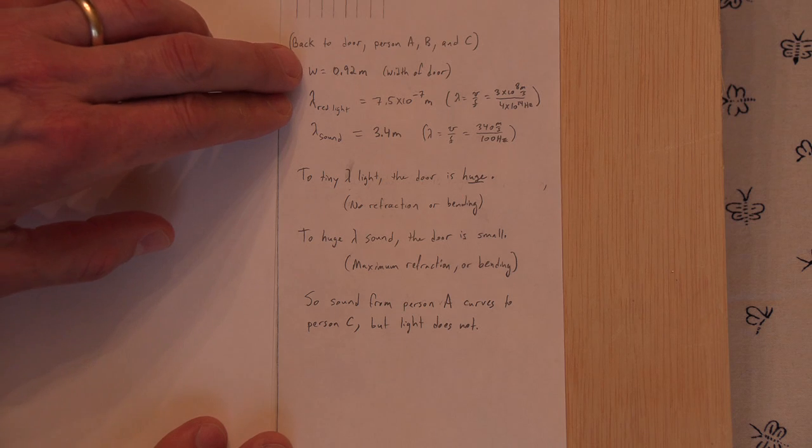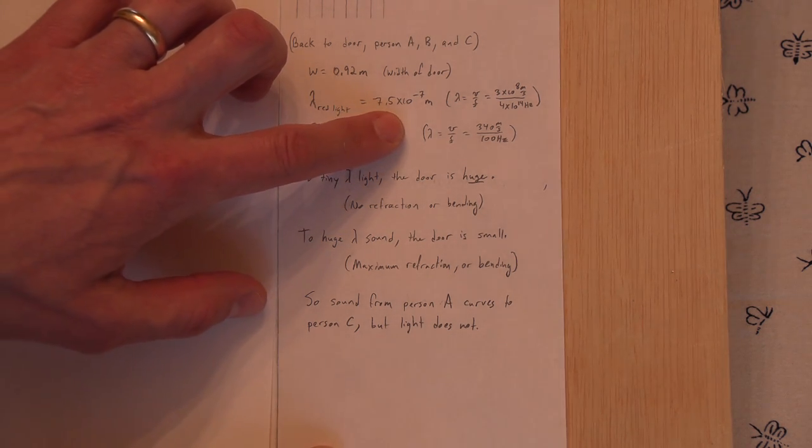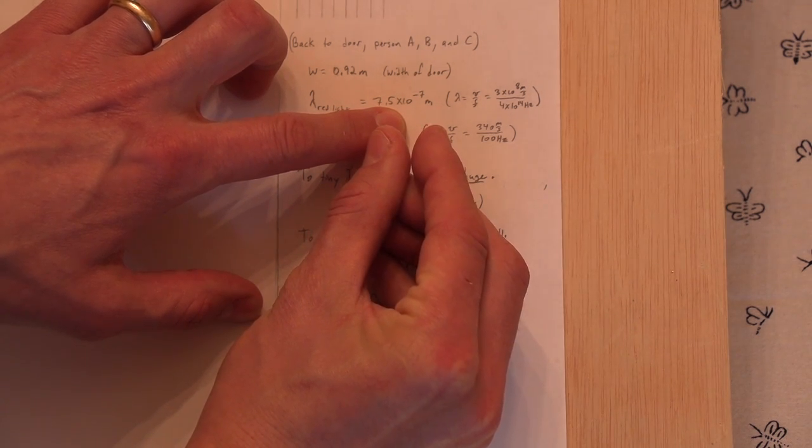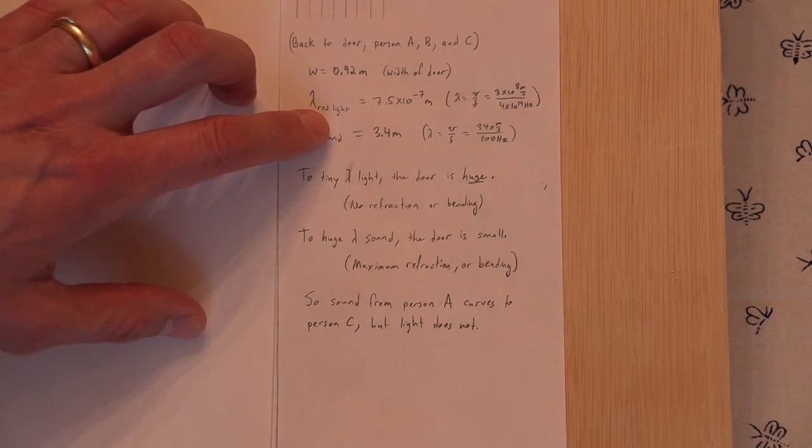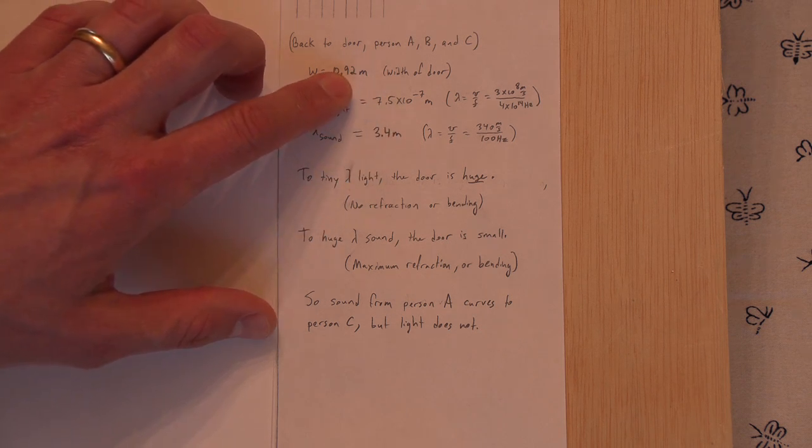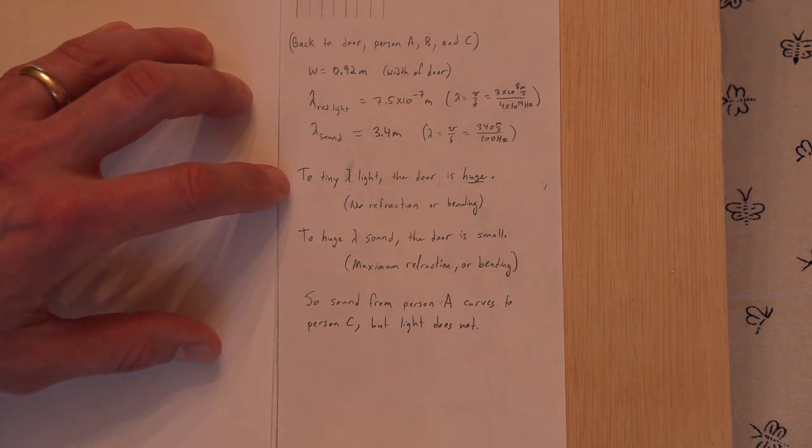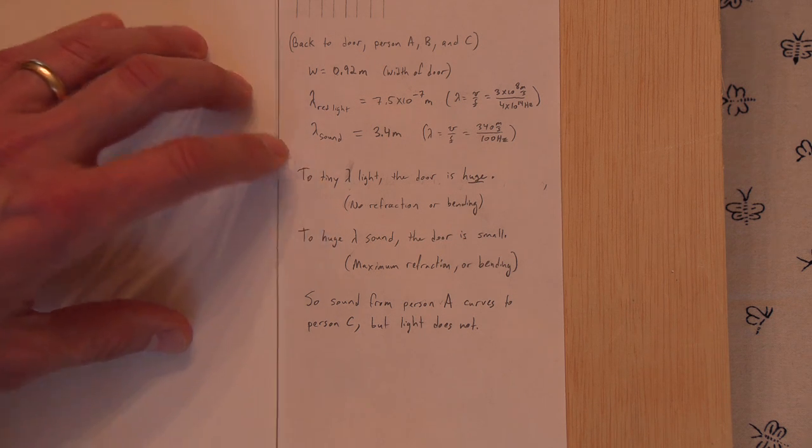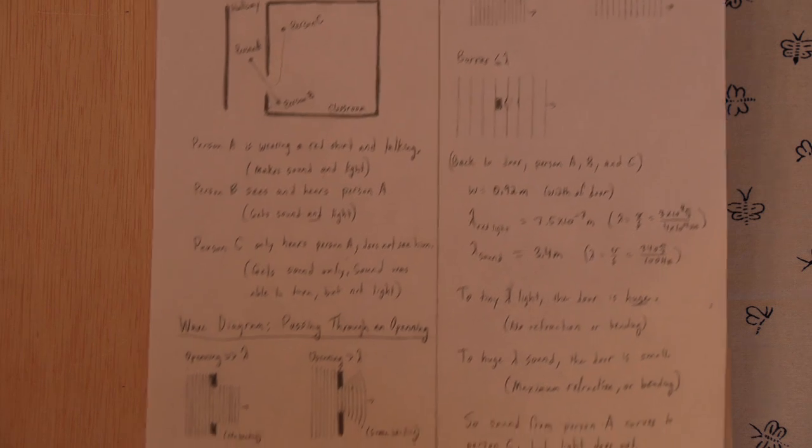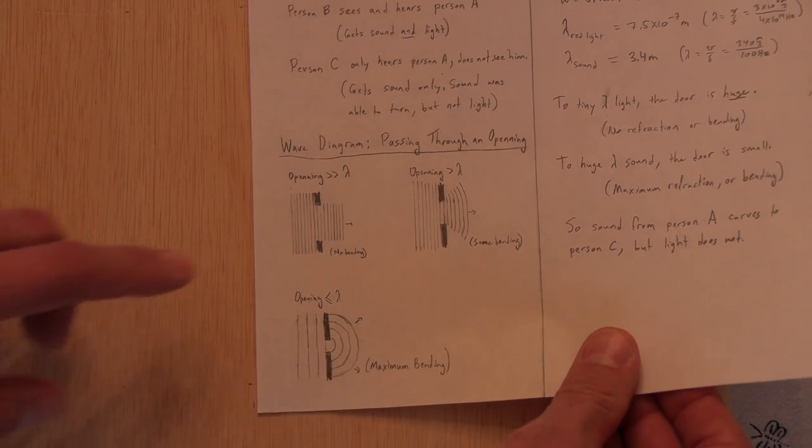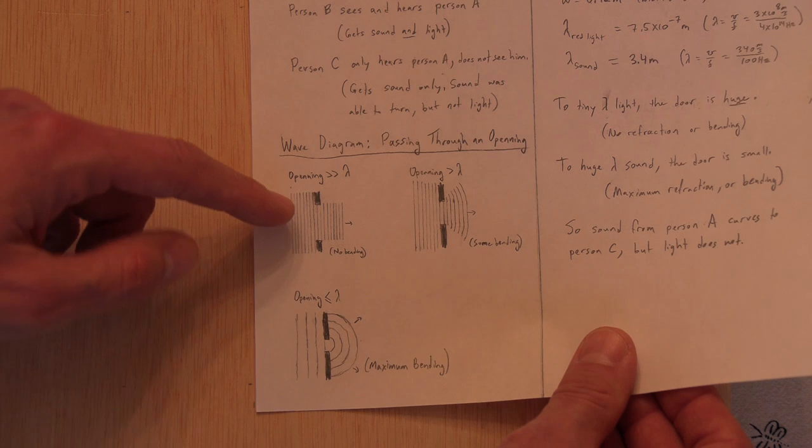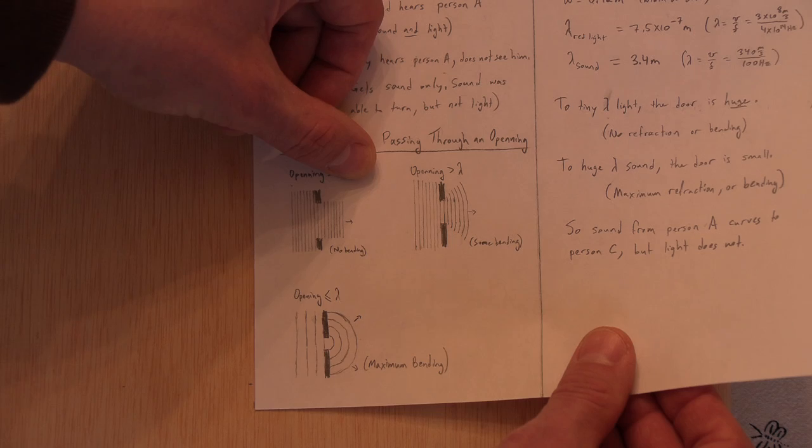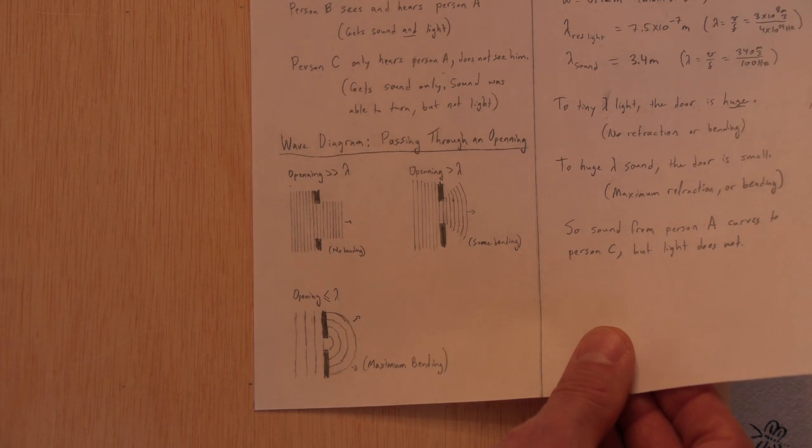So you look at that doorway. The red light coming off my shirt is less than a millionth of a meter wavelength. I mean, I can't even hold my fingers that close together. I could go like that, I suppose. So tiny, tiny waves coming to this door. To the tiny wavelength of light, the door is huge. So it's like, I'll try and do this without making you too dizzy. It's like this, a huge door, tiny wavelength. So when the light comes through, it does not bend and get to the person in the back of the room here. So that's that.